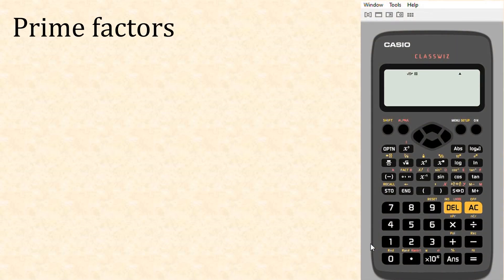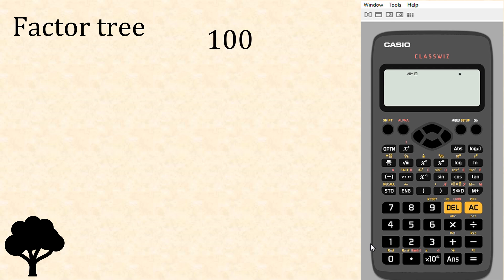Looking at our prime factors, we need to use the factor tree. Here we have 100. This can be divided by 25 four times, and then we need to look at 25. This can be divided by 5, and this goes in five times, giving us two prime factors because we can't get that any smaller.